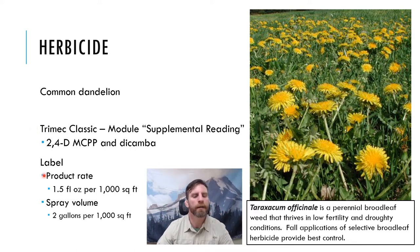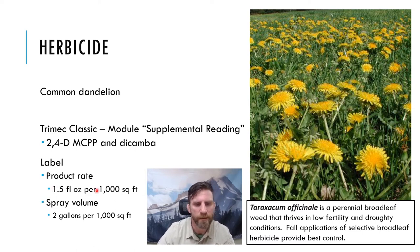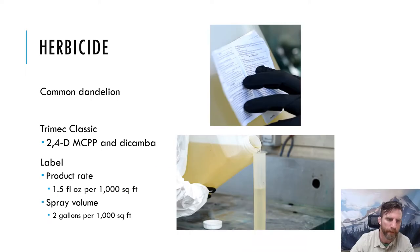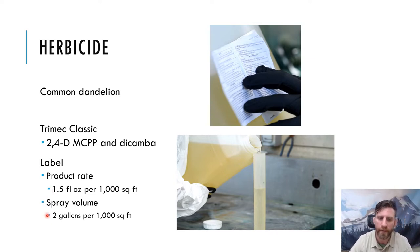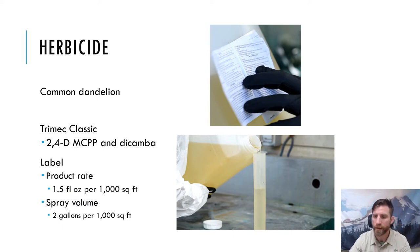I opened the label and found that the maximum product rate we can use is 1.5 fluid ounces per thousand square feet. The spray volume is 2 gallons per thousand square feet. So for every 2 gallons of water in the tank, we put in 1.5 fluid ounces of product.